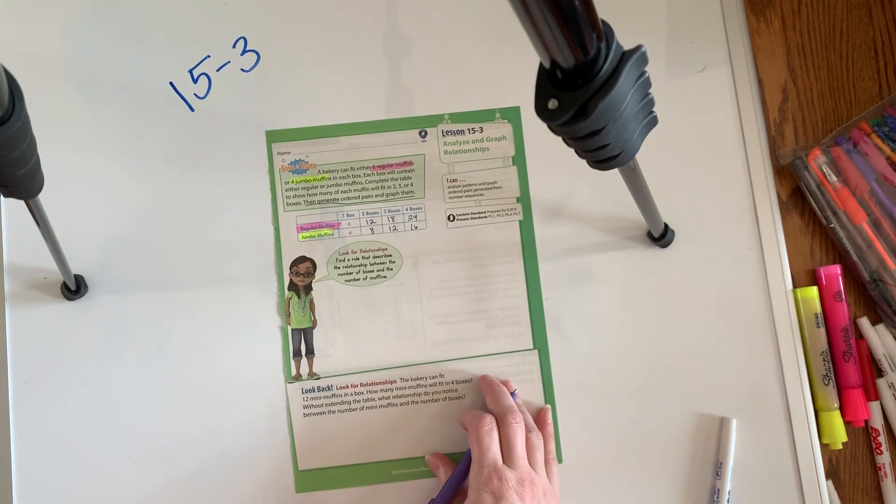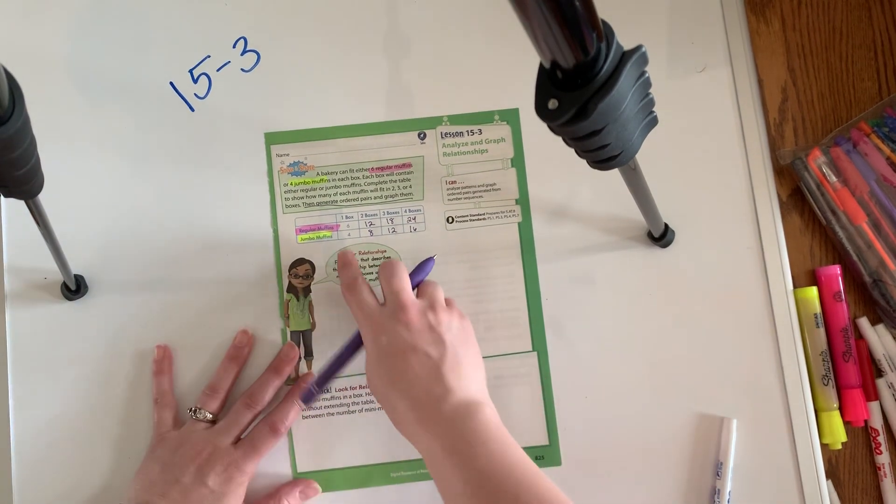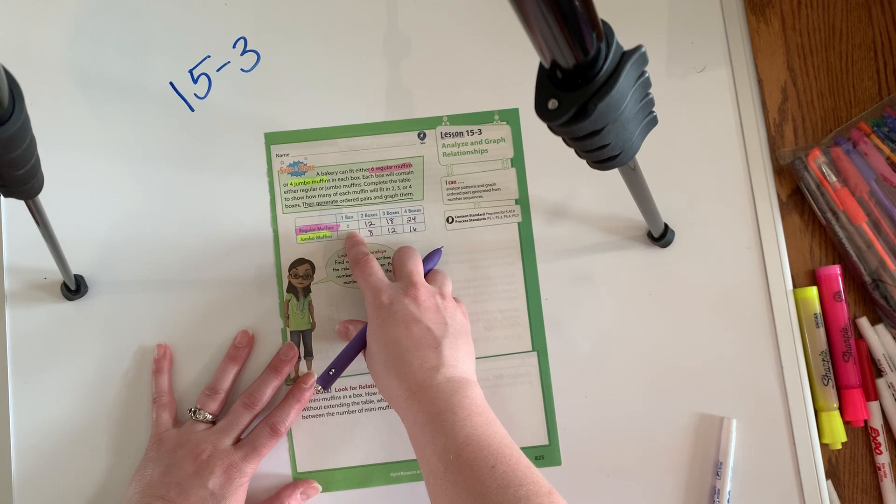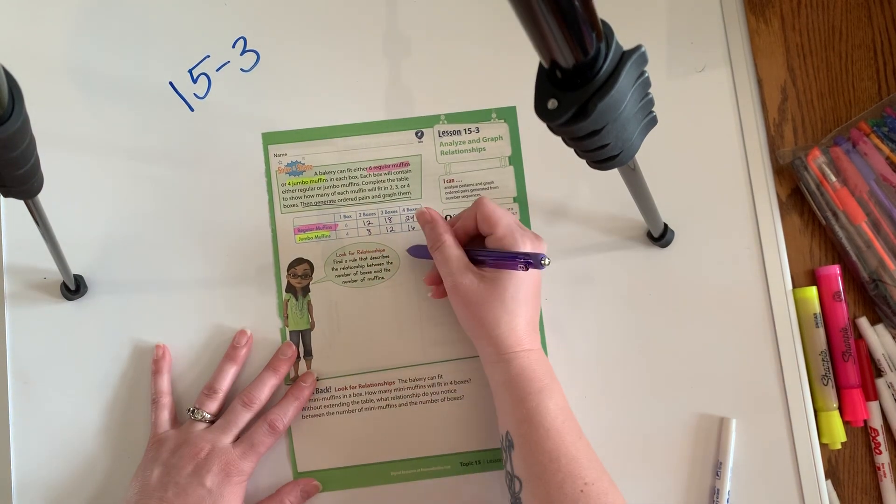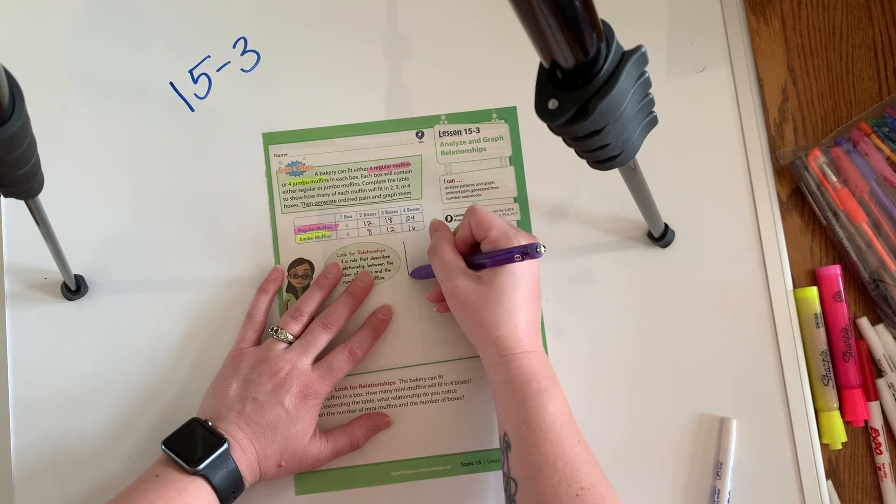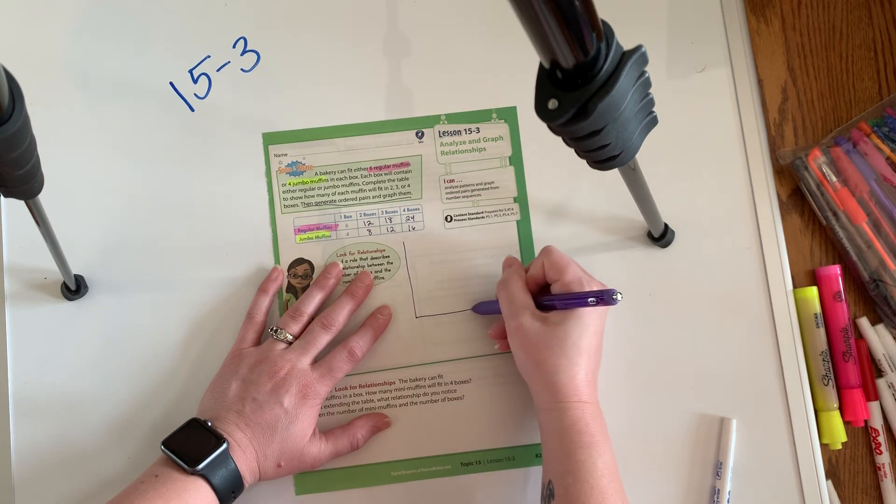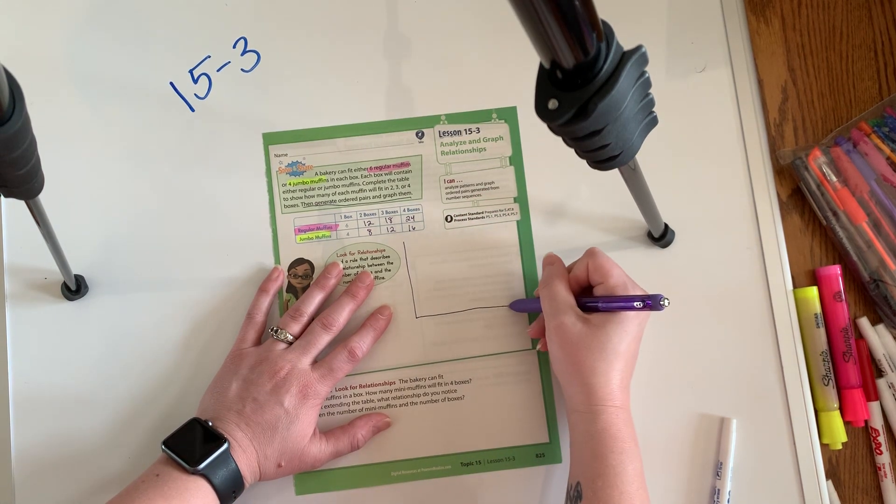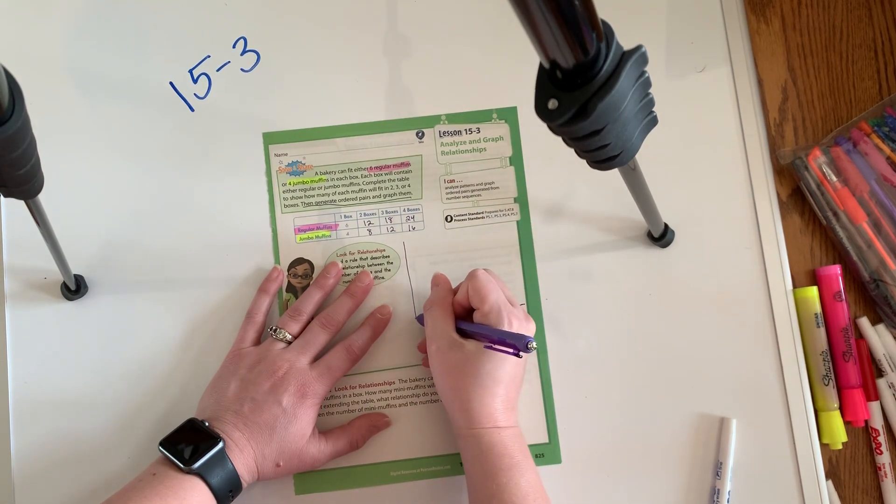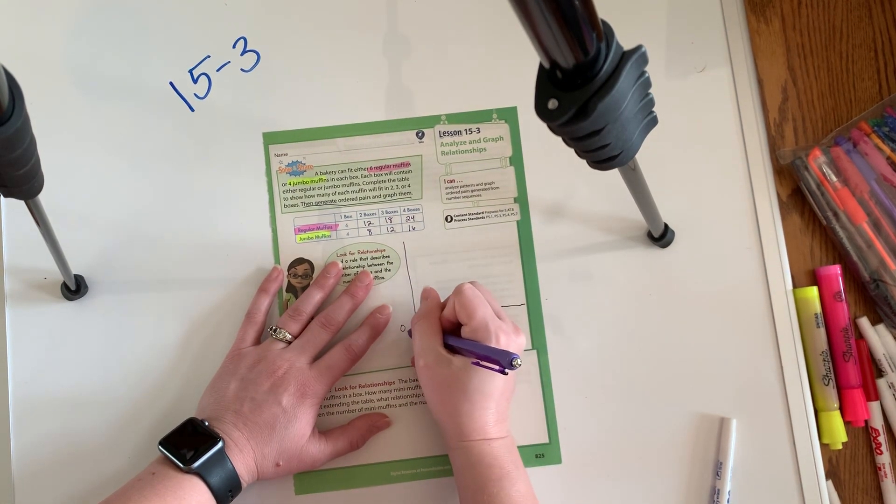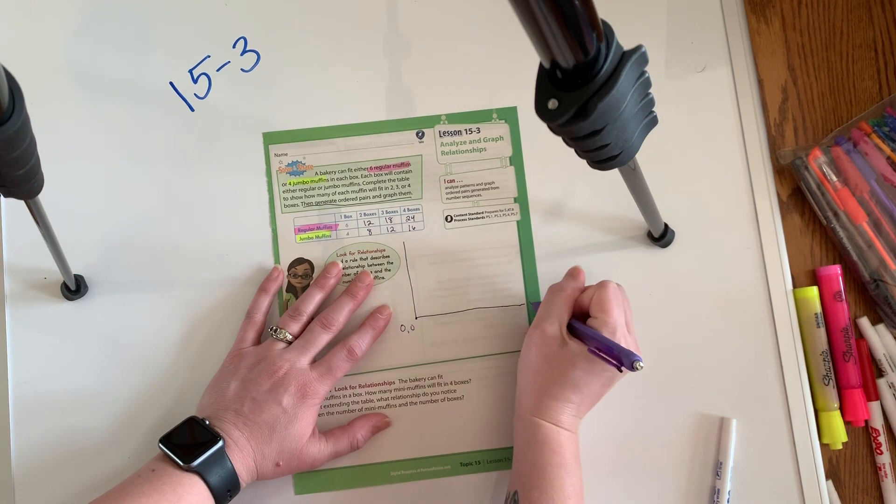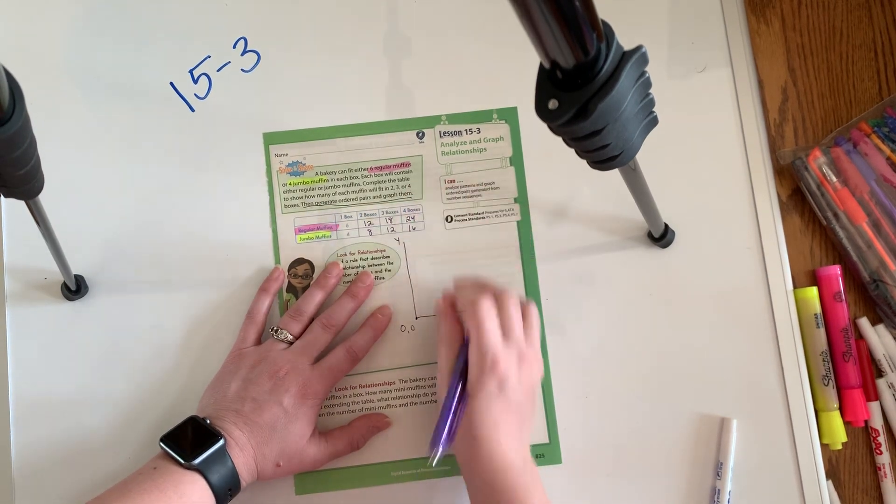And what we have done here, boys and girls, is we've actually created ordered pairs. And so what we're going to have to do is we're going to have to make a chart like this. This was of course the origin that would be zero comma zero. This is the X axis, and this is the Y axis.